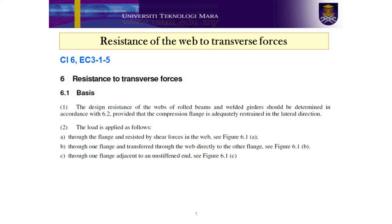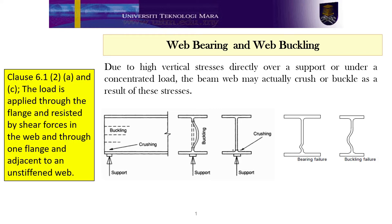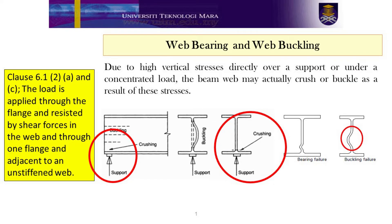Detailed explanation on the load conditions is explained next. If the load is applied based on Clause 6.1.2A and C, in which the load is applied through the flange and resisted by shear forces in the web, the possible failure mechanisms are crushing of the web close to the flange accompanied by yielding of the flange — the combined effect sometimes referred to as web crushing — and also localised buckling and crushing of the web beneath the flange.